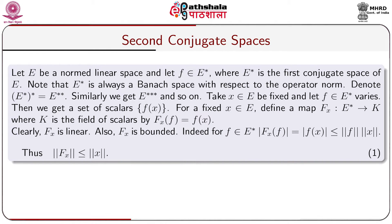Let E be a normed linear space and let f belong to E*, where E* is the first conjugate space of E. That means E* is the collection of all bounded linear functionals over E. It is to be noted that the collection of all bounded linear functionals, E*, is always a Banach space with respect to the operator norm.